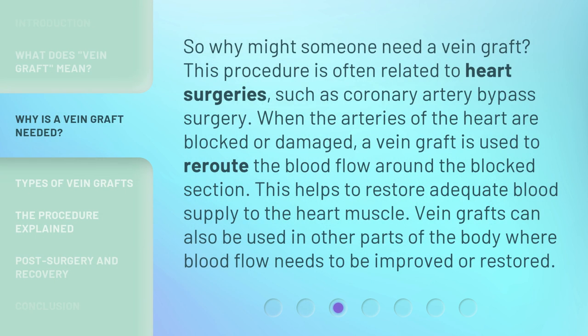So why might someone need a vein graft? This procedure is often related to heart surgeries such as coronary artery bypass surgery. When the arteries of the heart are blocked or damaged, a vein graft is used to reroute the blood flow around the blocked section. This helps to restore adequate blood supply to the heart muscle. Vein grafts can also be used in other parts of the body where blood flow needs to be improved or restored.